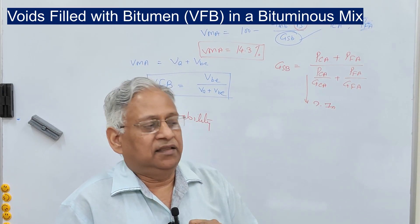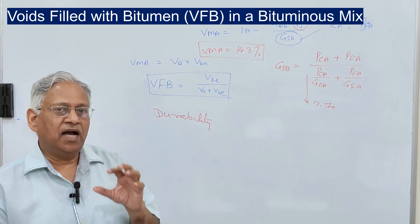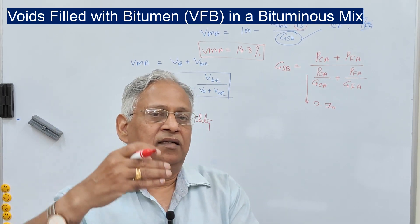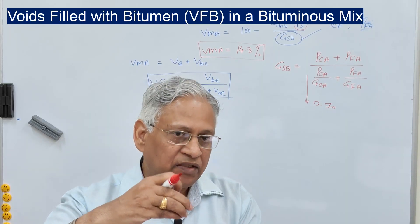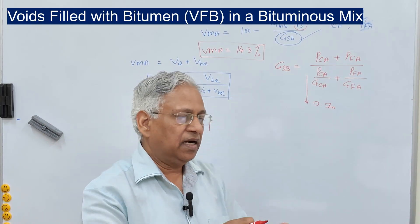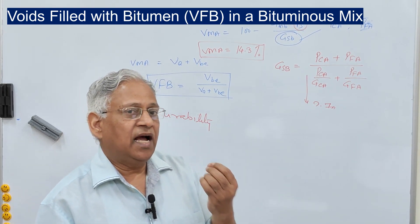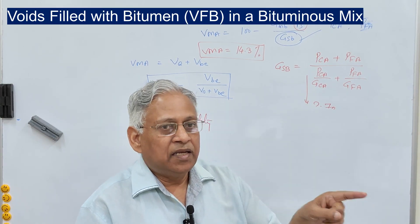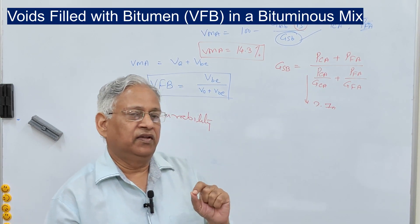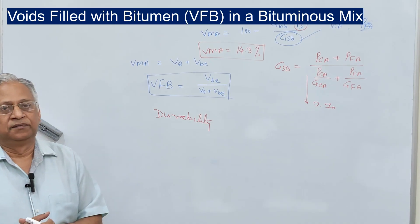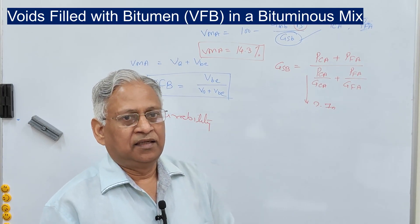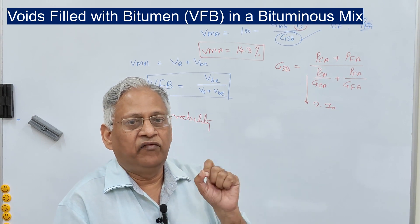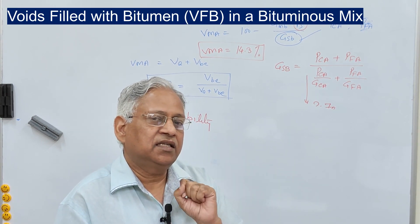Second, there is an excellent correlation between VFB and the percent density. Low VFB means high air voids, which means you are compacting the mixture at a low density. Such a mix will have a chance of over-densification in the field by moving traffic, and that kind of mix will be likely to bleed. That is why the majority of countries have a general range of VFB specification. In India, it is 65 to 75 percent.